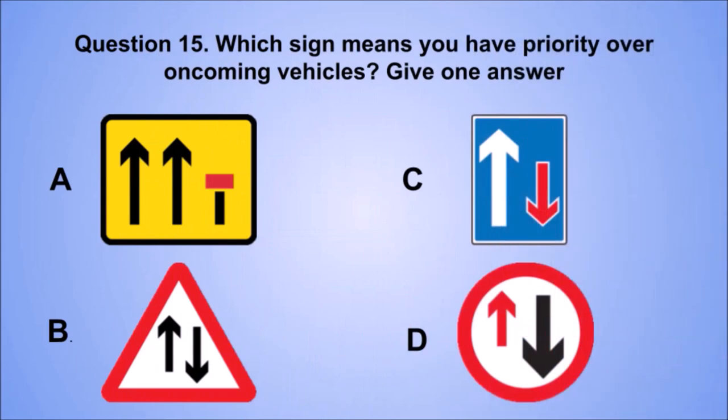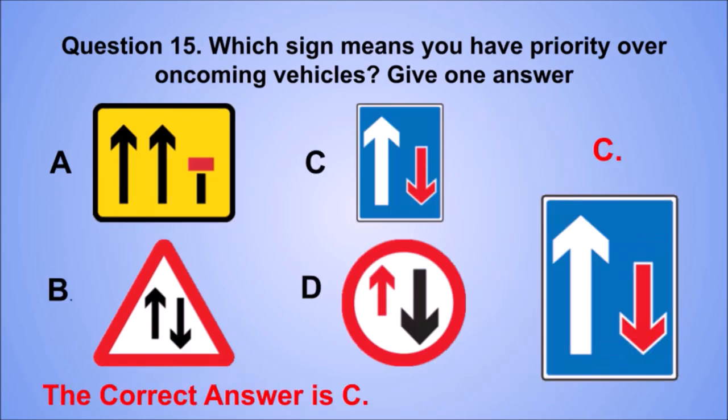Question 15. Which sign means you have priority over oncoming vehicles? Give one answer. A. B. C. D. The correct answer is C.